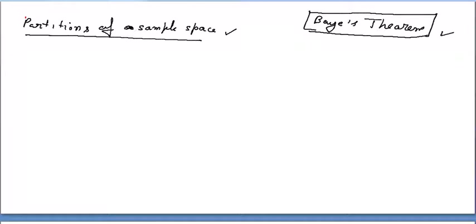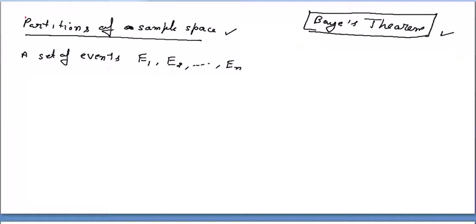So what will be the partition of the sample space? Let us suppose we have a set of events E1, E2, and so on up to En. And all the events are sets themselves also.